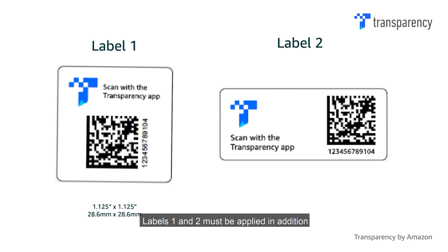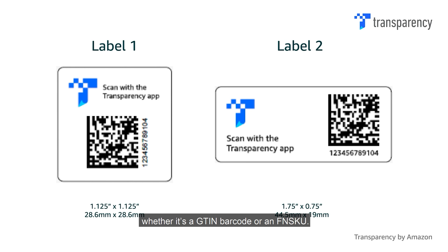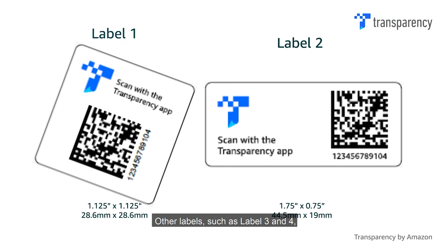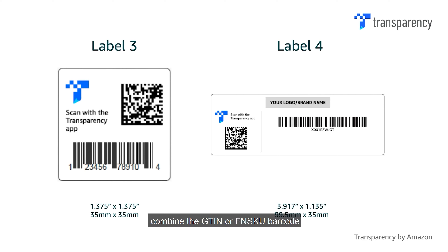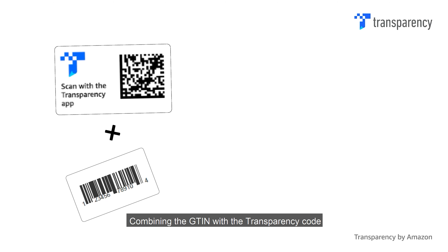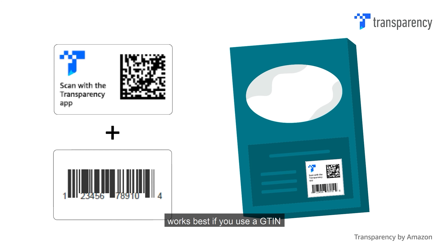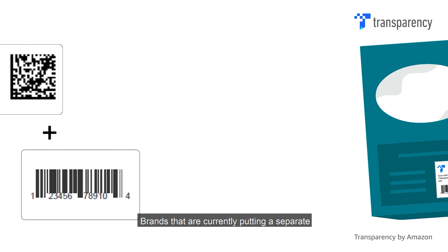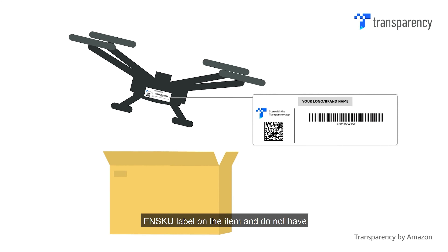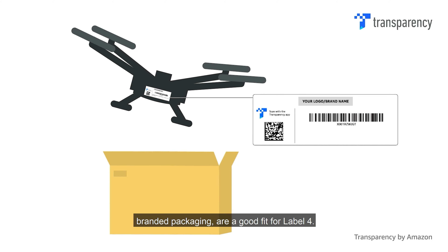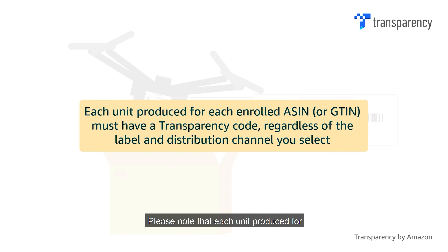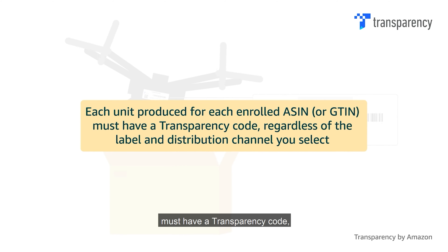Labels 1 and 2 must be applied in addition to the codes that you apply today, whether it's a GTIN barcode or an FN-SKU. Other labels, such as label 3 and 4, combine the GTIN or FN-SKU barcode with the Transparency code. Labels 3 and 4 are beneficial in that they simplify the workflow by combining two labels into one. Combining the GTIN with the Transparency code works best if you use a GTIN as a sticker on your inventory. Brands that are currently putting a separate FN-SKU label on the item and do not have branded packaging are a good fit for label 4. Please note that each unit produced for each enrolled ASIN or GTIN must have a Transparency code regardless of the label and distribution channel you select.